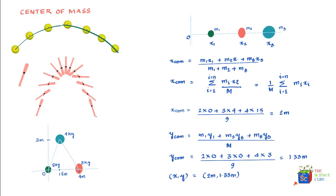Plotting this on the coordinate system: x = 2 meters and y = 1.33 meters places the center of mass where we intuitively expected — slightly to the right and upward, closer to the 4 kg and 3 kg masses.